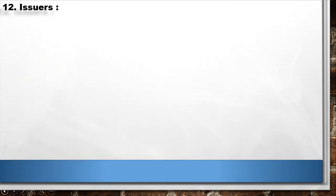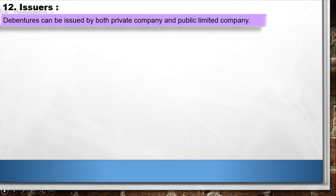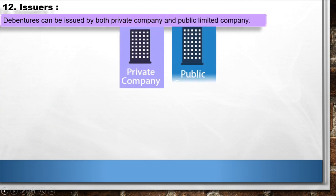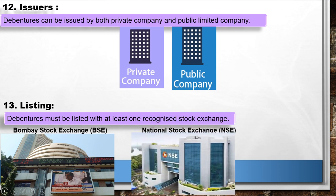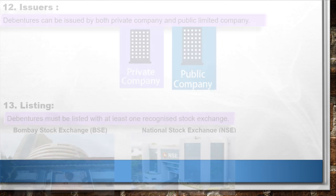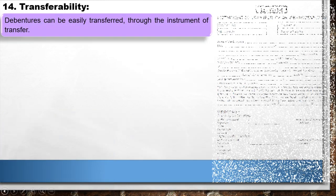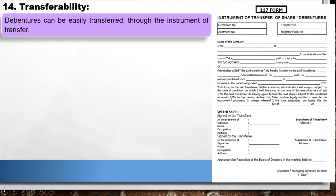12. Issues: Debentures can be issued by both private companies and public limited companies. 13. Listing: Debentures must be listed with at least one recognized stock exchange. 14. Transferability: Debentures can be easily transferred through the instrument of transfer.